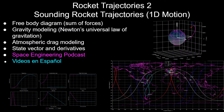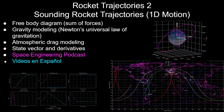In this Rocket Trajectories video, we'll be going over the free body diagram, or the sum of the forces, in order to calculate the acceleration equation of the rocket. We'll be going over gravity modeling using Newton's universal law of gravitation, atmospheric drag modeling, and the state vector and derivatives in order to plug these equations of motion into an ordinary differential equation solver.